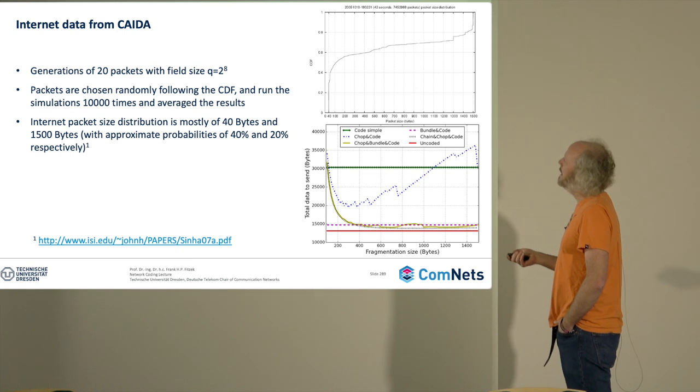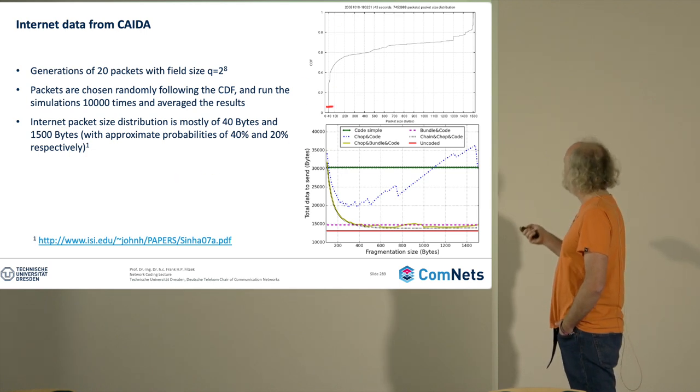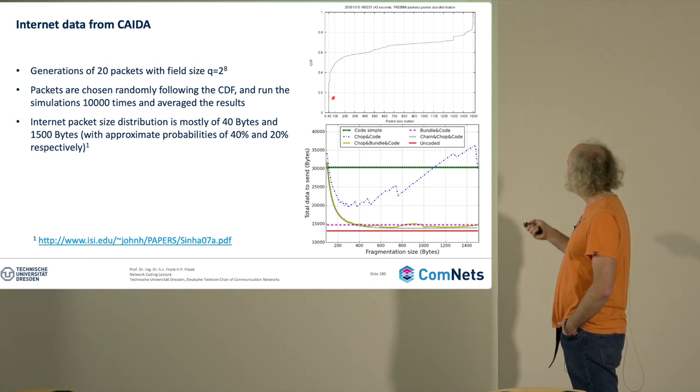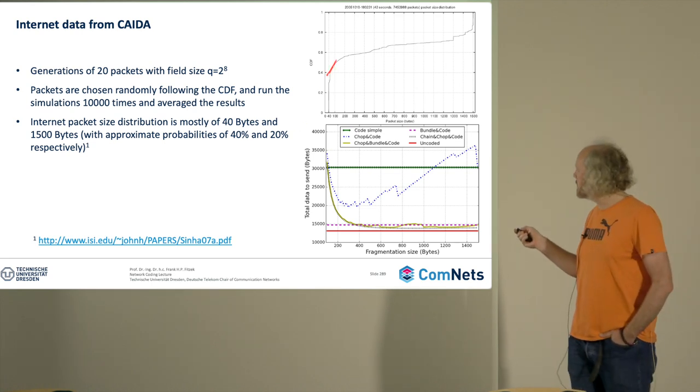How would this look in real internet traffic? We just assumed some examples. What we did is we went to a database and we looked into different packet sizes, and you see that there are very small packets, mediocre packets here in the middle, and then the large MTU size of 1500. The smaller ones here are the acknowledgements of TCP.